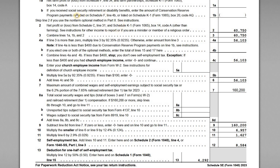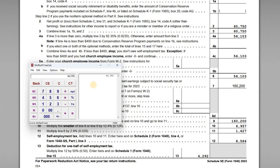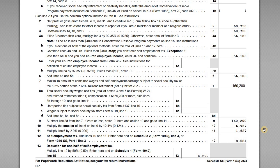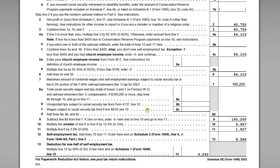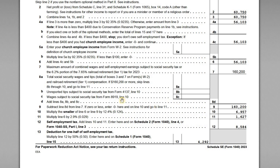On line 2, we have net profit or loss from Schedule C line 31: $60,750. On line 4A, we multiply that value by 92.35%. So $60,750 times 92.35% gives us $56,102, rounded up to $56,103. We're not using any of the optional methods, so we skip over those items. Ultimately on line 6, adding lines 4C and 5B, we're left with $56,103.